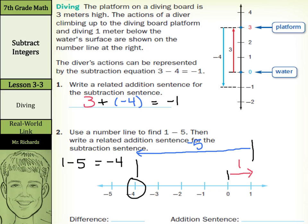If I want to write a related addition sentence to that, we started with one, and then we can go plus that negative five equals negative four.